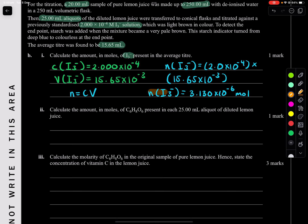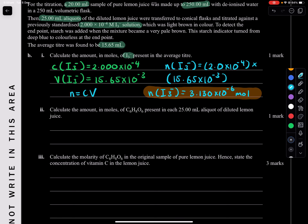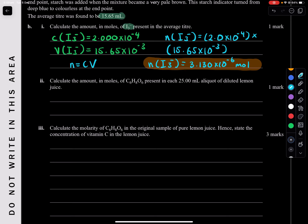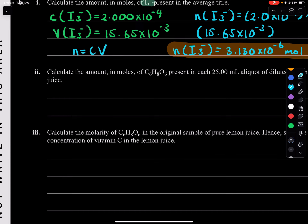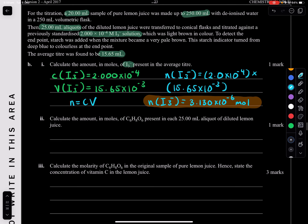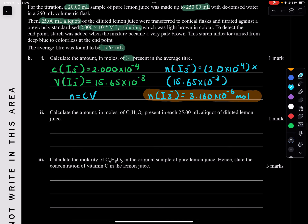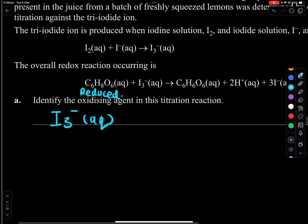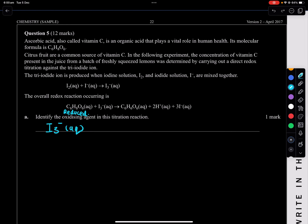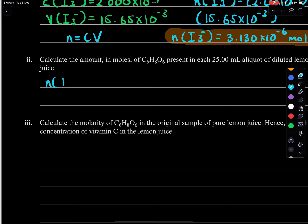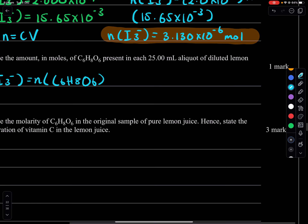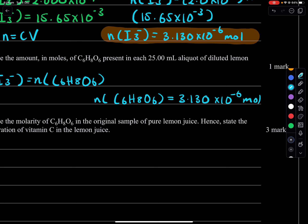Calculate moles of ascorbic acid (C₆H₈O₆) in the 25 mL aliquot. From the balanced equation, the molar ratio of I₃⁻ to C₆H₈O₆ is 1:1. Therefore moles of C₆H₈O₆ = moles of I₃⁻ = 3.130 × 10⁻⁶ mol.